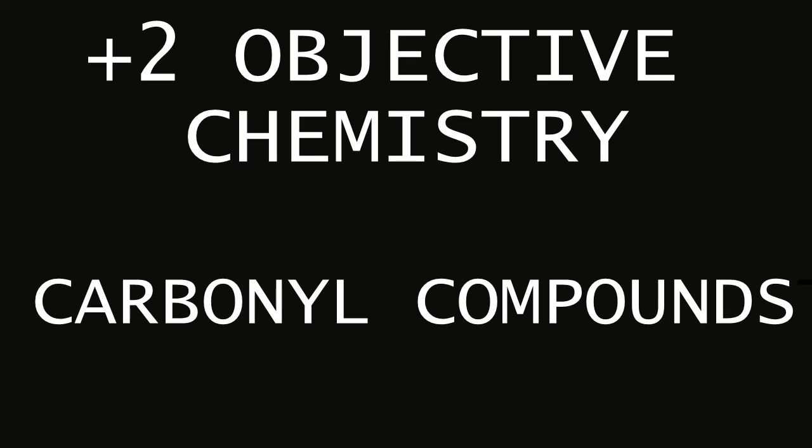Which of the following gives tertiary butyl alcohol by the action of methyl magnesium iodide? The answer is CH3COCH3 plus CH3MgI gives tertiary butyl alcohol.